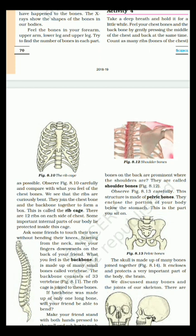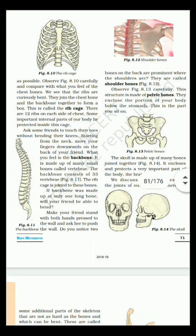What you feel is the backbone. It is made up of many small bones called vertebrae. The backbone consists of 33 vertebrae. The rib cage is joined to these bones. Then, how many vertebrae? 33.